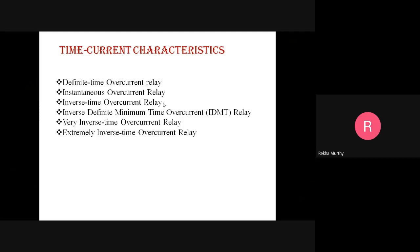In the inverse definite minimum time (IDMT) relay, this type gives an inverse time current characteristic at lower values of fault current, and a definite time characteristic at higher values of fault current. So it is a combination of both inverse time current characteristic and definite time characteristic — inverse time at lower fault currents, definite time at higher fault currents.